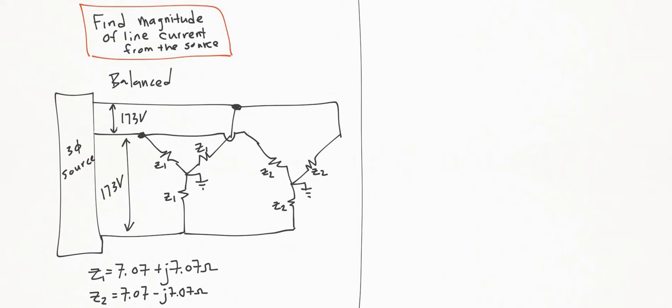So Z equals Z1 in parallel with Z2, and we can do the product over sum rule: Z1 times Z2 divided by Z1 plus Z2. When we plug in those numbers, we actually cancel out all imaginary numbers and end up with simply 7.07.